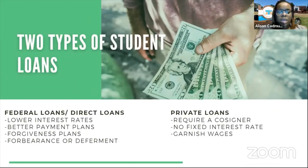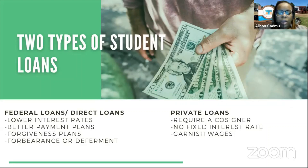There are two types of student loans: federal direct loans and private loans. Federal direct loans have lower interest rates and better repayment plans, such as income-driven plans, forgiveness plans, forbearance, or deferment. Private loans should only be used after exhausting all federal loans, because they require co-signers, have no fixed interest rate — so as the market goes up, the rate goes up — and if you do not repay, they may garnish your wages.